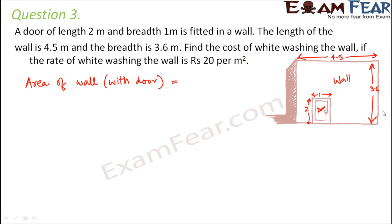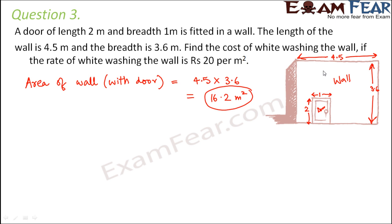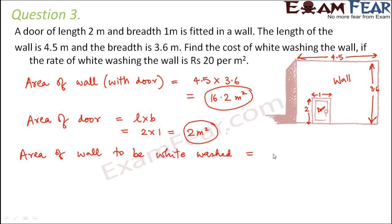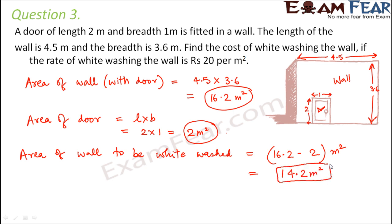The total area of the wall is length × breadth = 4.5 × 3.6 = 16.2 square meters. The area of the door, also a rectangle, is 2 × 1 = 2 square meters. The area of the wall to be whitewashed = total area − area of door = 16.2 − 2 = 14.2 square meters.